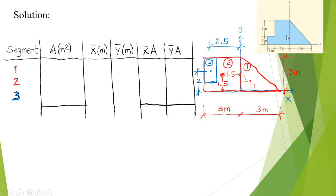Take note that this object can be represented by: element number 1, segment number 1, plus segment number 2, and we subtract segment number 3, such that we will have this equivalent shape.